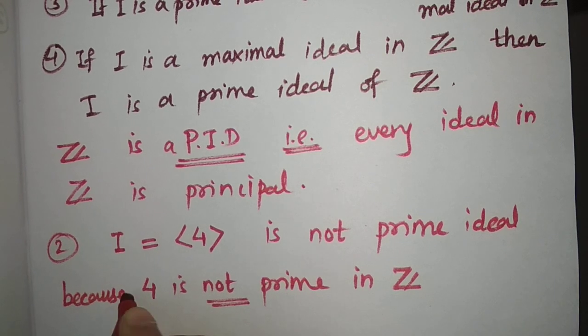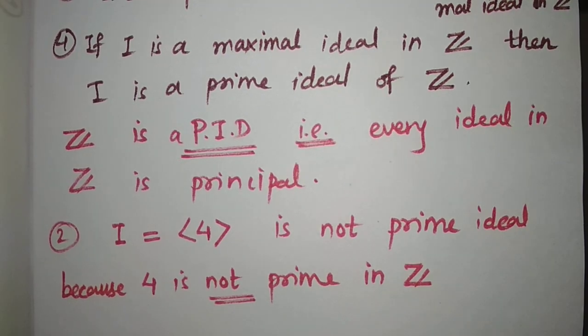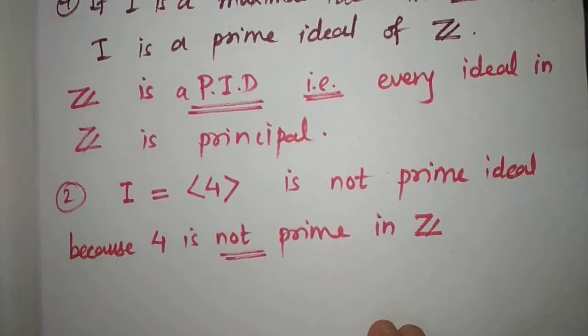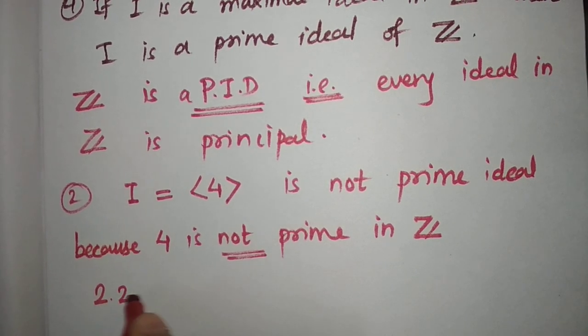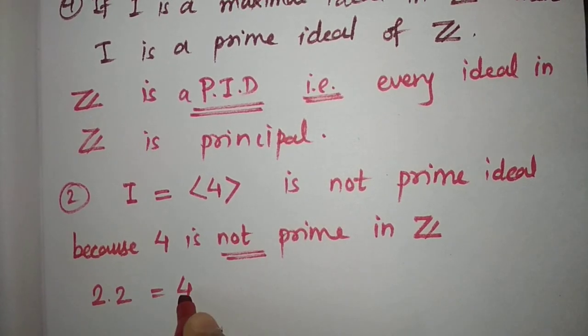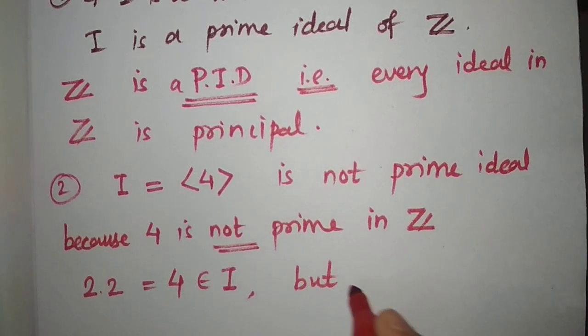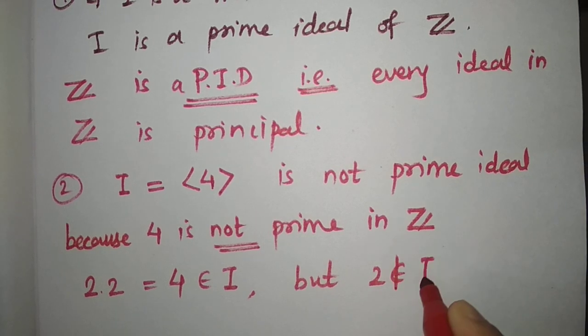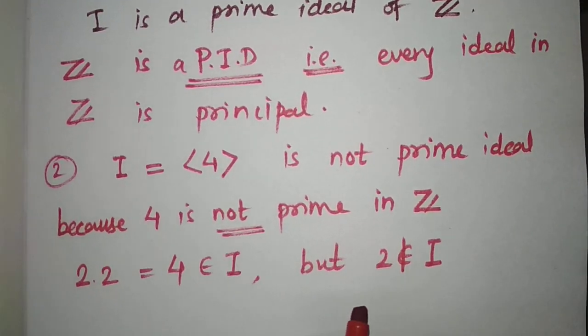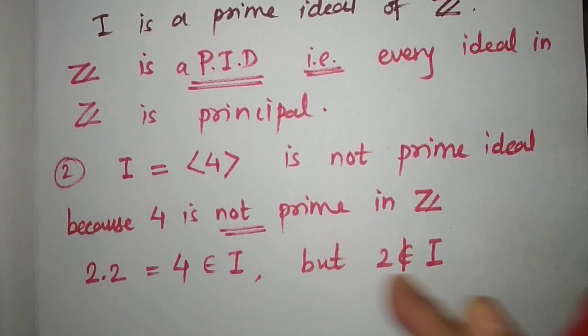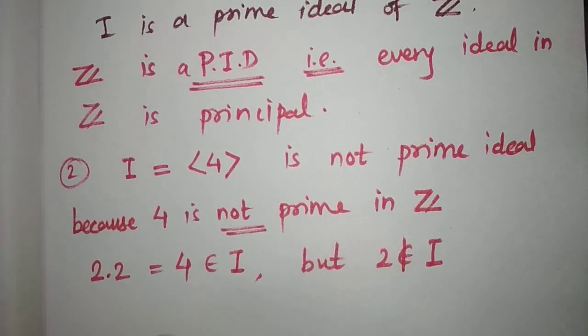It is not a prime ideal. By definition, you just take the product: 2 times 2 is 4. Now, this 4 belongs to I, but 2 doesn't belong to I. By the definition of prime ideal, if ab belongs to ideal I, then a belongs to I or b belongs to I.